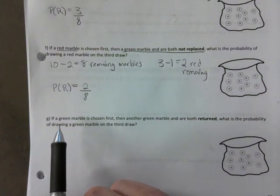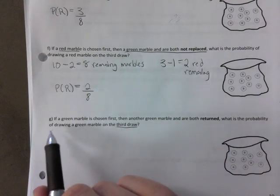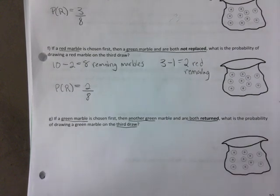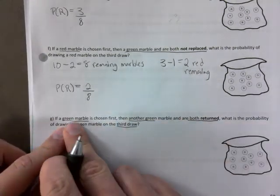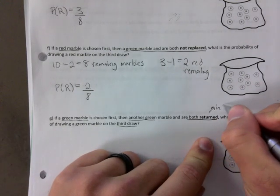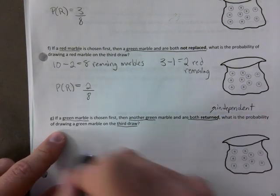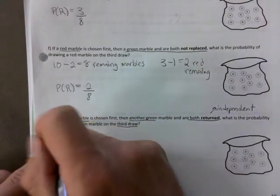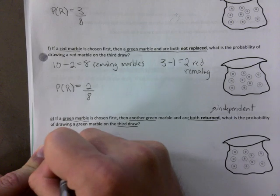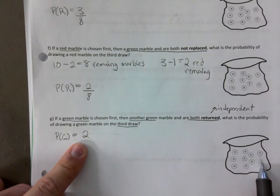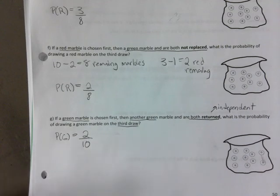Now for the third draw scenario where a green marble is chosen, then another green, and both are returned. We want the probability of drawing another green on the third draw. Since we returned them, each draw is independent. The first two draws don't affect the third. We still have two green marbles over the original total of 10. The probability is 2 over 10.